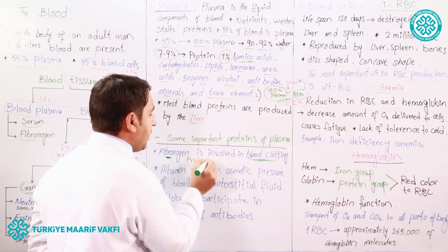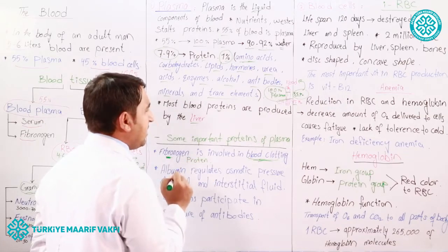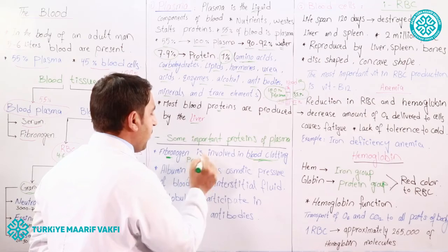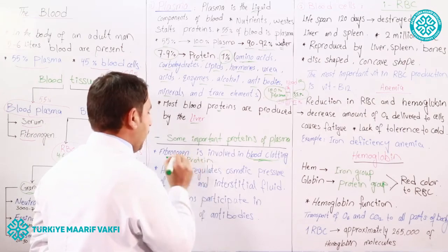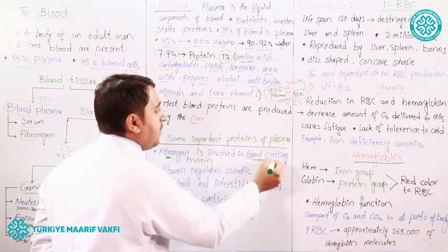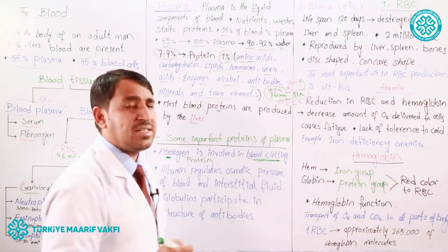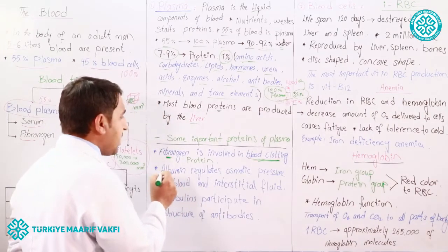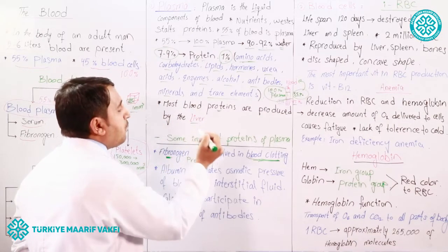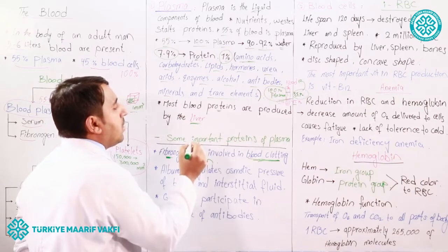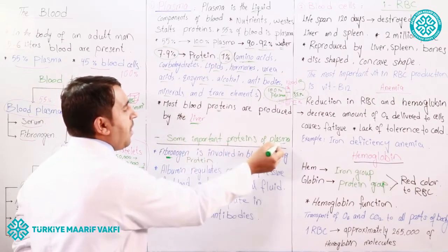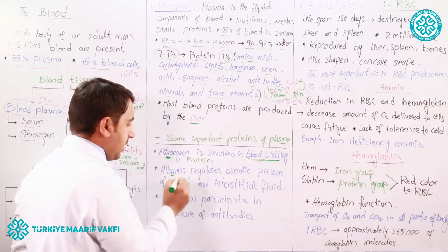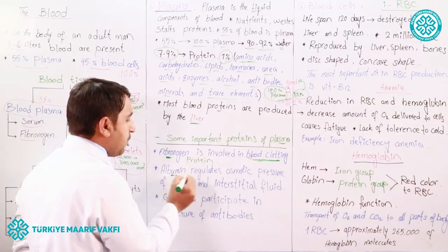Fibrinogen is a type of protein involved in blood clotting — it prevents bleeding from our body. The second plasma protein made by the liver is albumin. The function of albumin protein is to regulate osmotic pressure.